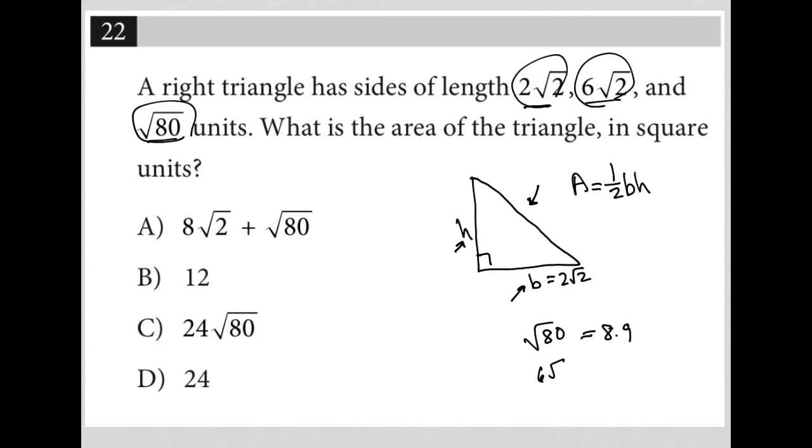And then 6 times the square root of 2 is 8.5. So 6√2 is equal to like 8.48, which means that my hypotenuse is √80, and then my height would be the 6√2. So now throwing this into my area formula, I have area is equal to 1/2 base, 2√2, times height, 6√2.